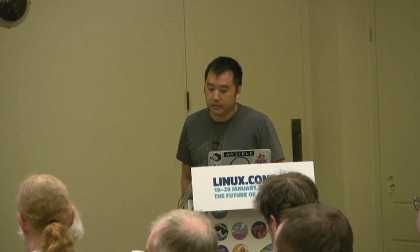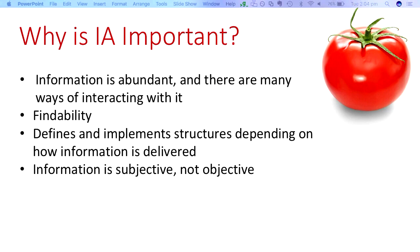Another point is that information is subjective, not objective. A user will interpret information or objects from the range of things they encounter or experience. A classic example is whether you would classify a tomato as a vegetable, fruit, or a berry. The average consumer might classify it as a vegetable because their experience is seeing it in a supermarket amongst all the other vegetables. However, a scientific definition would consider it a fruit because it has a seed in the pulp produced from a single ovary. From a botanical point of view, it would be classed as a berry. The point is that we organise and classify things based on how our users interpret and look for information.